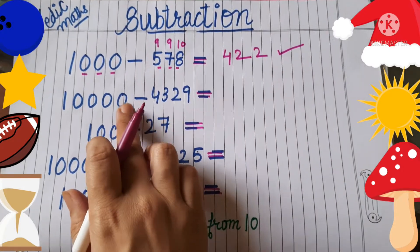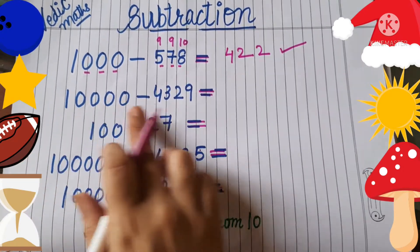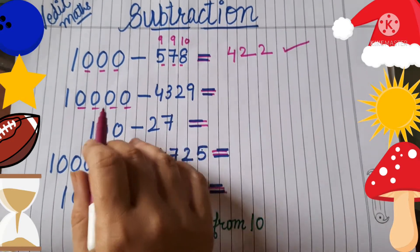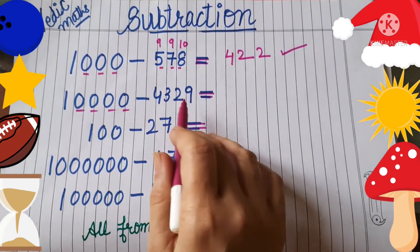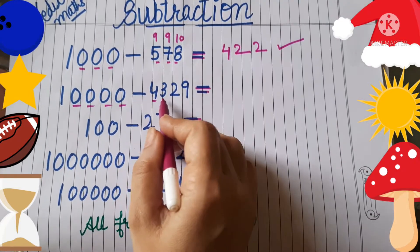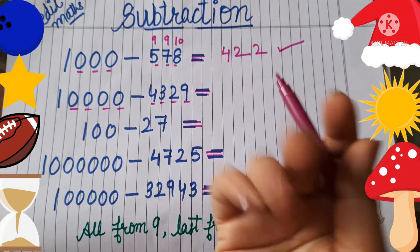Now move on to the next term. This is 10,000. Here four zeros are there. Just you have to check how many zeros are there and how many numbers we are going to subtract. Yes, here are also 4 zeros. That's okay.